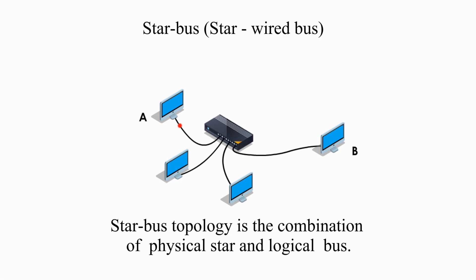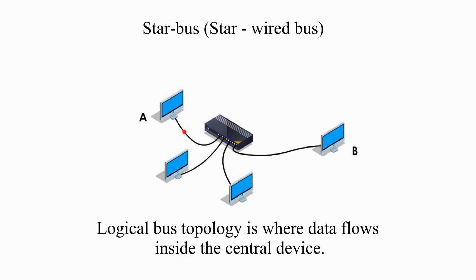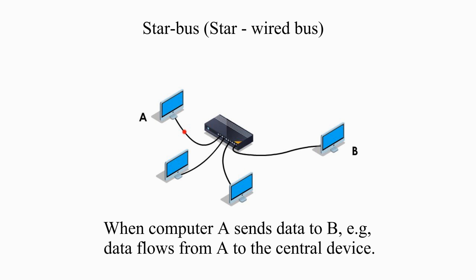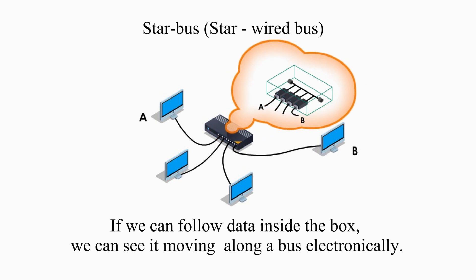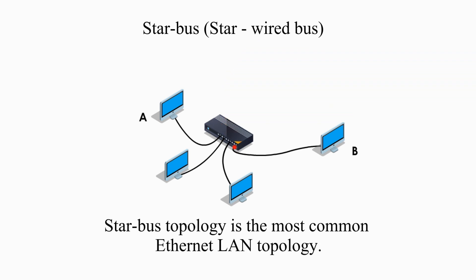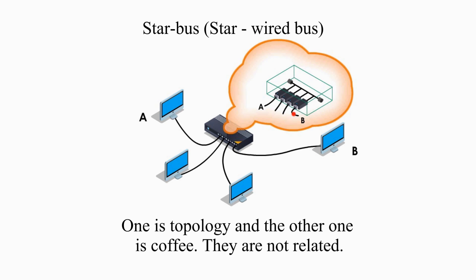Star-bus topology is the combination of physical star and logical bus. Physically we can see a star topology. Logically, data flows inside the central box — when computer A sends data to B, data flows from A to the central device and moves along a bus electronically. Star-bus topology is the most common Ethernet LAN topology. By the way, please do not confuse star-bus with Starbucks — one is a topology and the other is a coffee. They are not related.